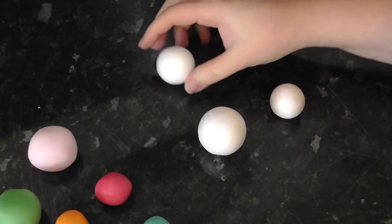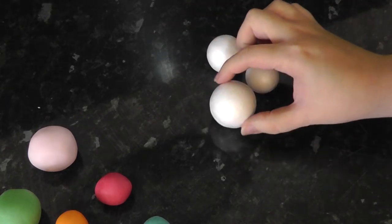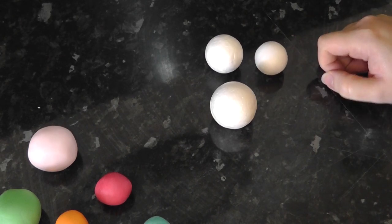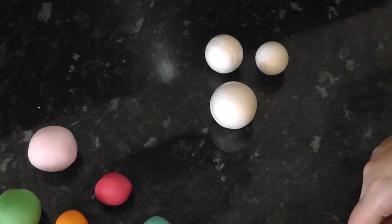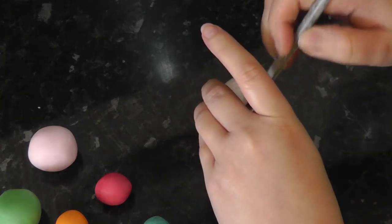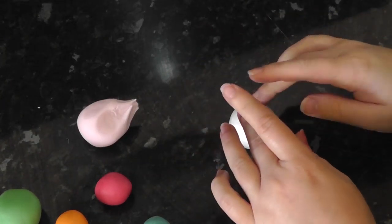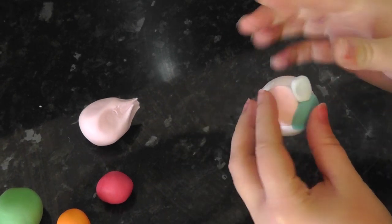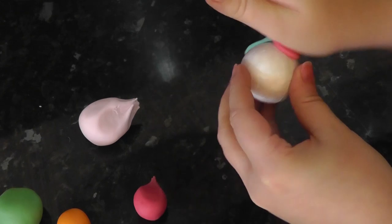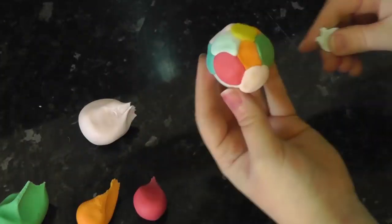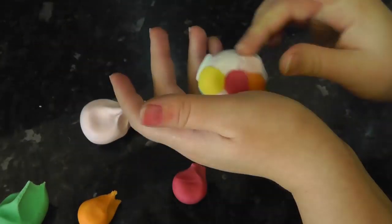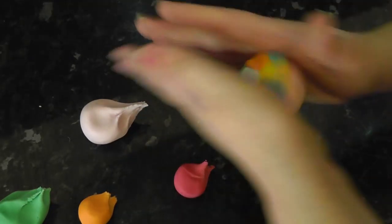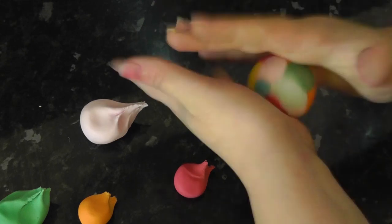For the final decoration, grab some polystyrene balls in various sizes. It doesn't matter too much which you choose, and you'll need your balls of colors. Coat your ball in piping gel and stick on blobs of color until it fills the outside.